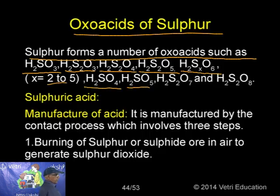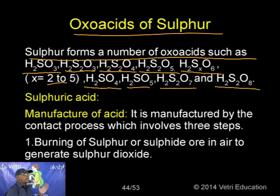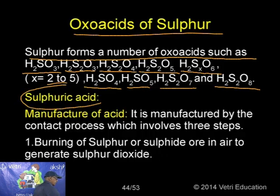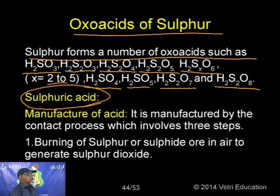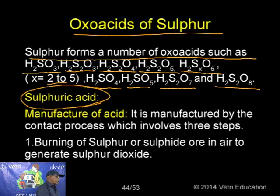SO₂ also reacts with oxygen in the presence of vanadium pentoxide V₂O₅ as catalyst to produce sulphur trioxide SO₃. This is an important step in sulphuric acid manufacture. When SO₂ dissolves in water, it forms sulphurous acid H₂SO₃ — confirming SO₂ is an acidic oxide.